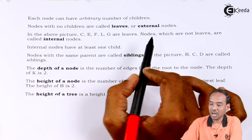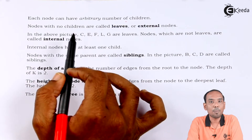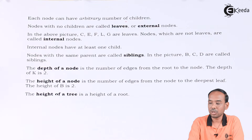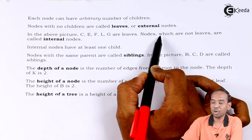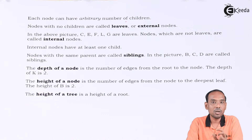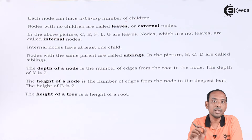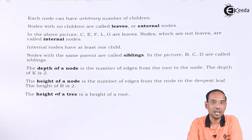Nodes which are not leaves are called internal nodes — it is just the opposite of external nodes. In the case of external nodes, we do not have any children for that particular node. Nodes with children are called internal nodes, and internal nodes should have at least one child. A node can be either external or internal, defined based on the number of children it has.